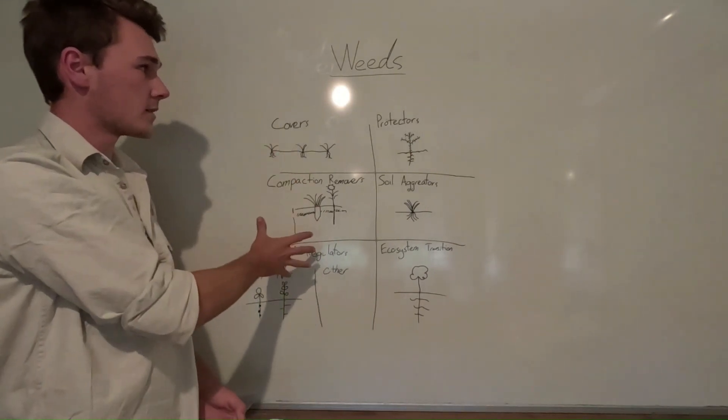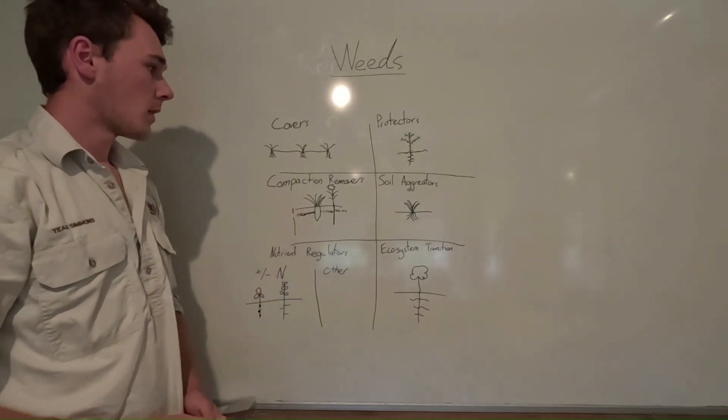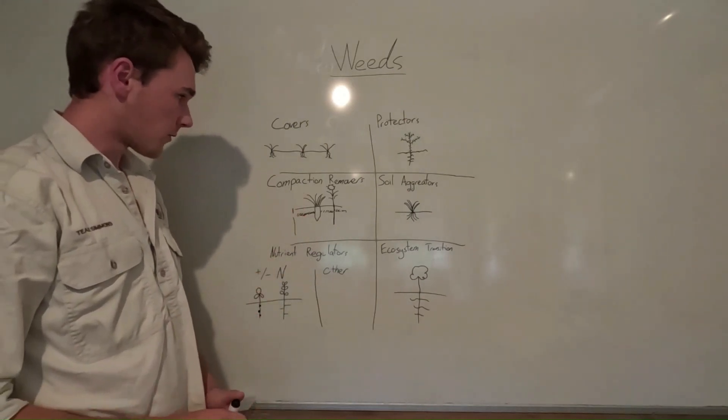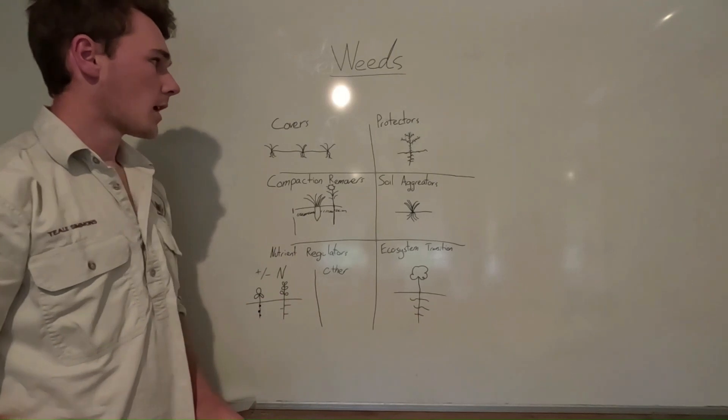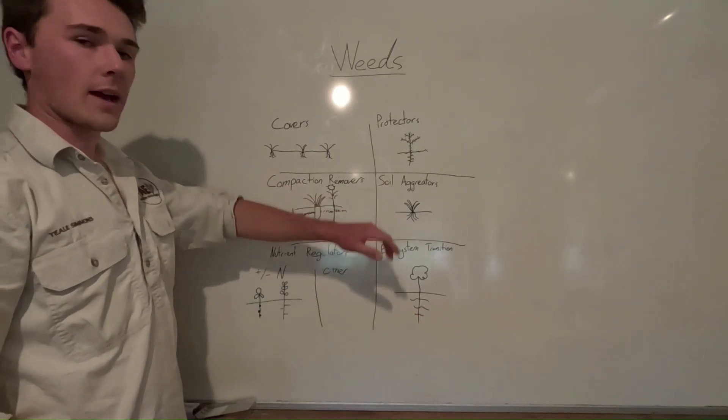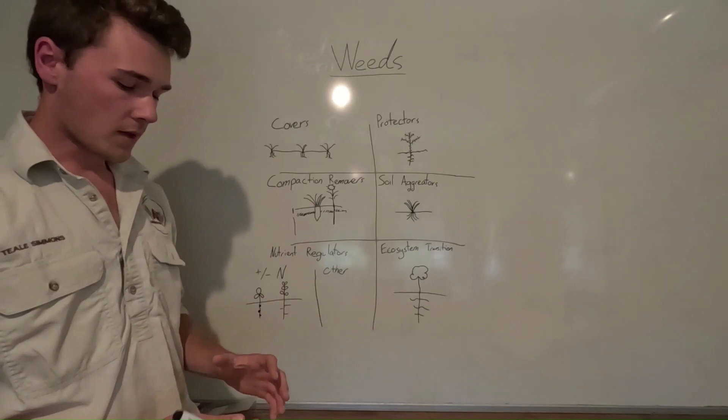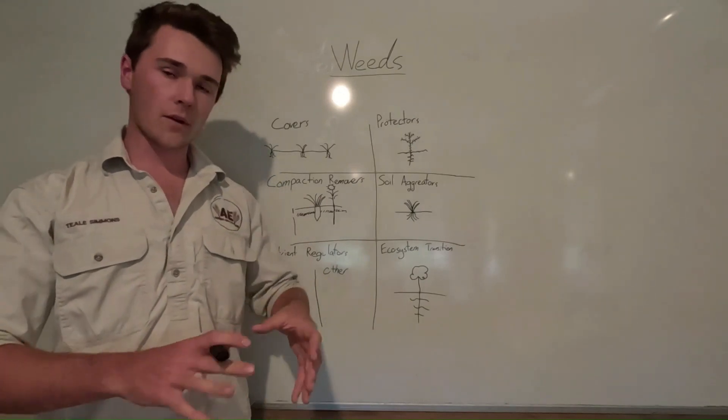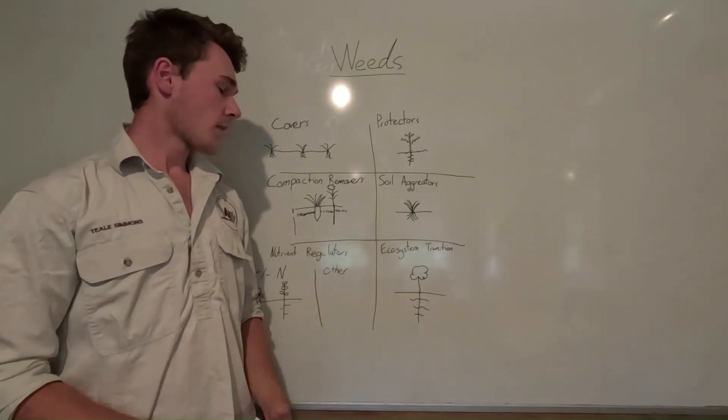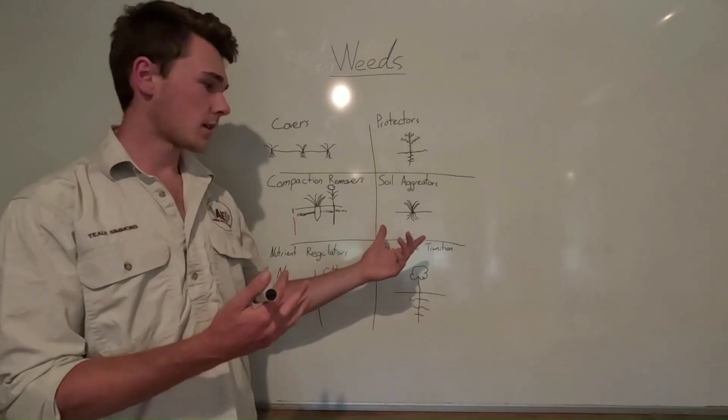So that's like sunflowers and tillage radish. You can use those ideas to build a cover crop mixture from these niches. Another niche is soil aggregators. That's more like the grasses that have really fine fibrous root structures to hold together really loose soils.